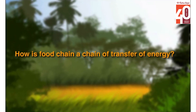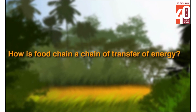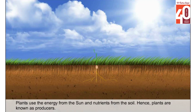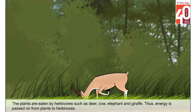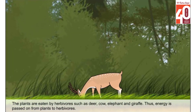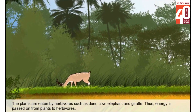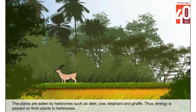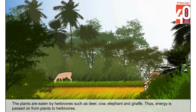How is a food chain a chain of transfer of energy? Plants use the energy from the sun and nutrients from the soil. Hence, plants are known as producers. The plants are eaten by herbivores such as deer, cow, elephant and giraffe. Thus, energy is passed on from plants to herbivores.